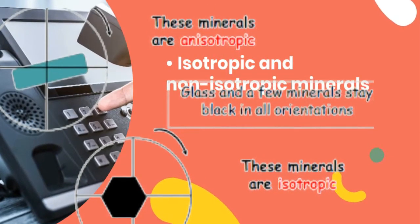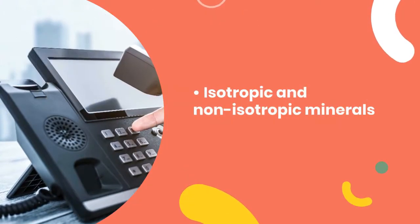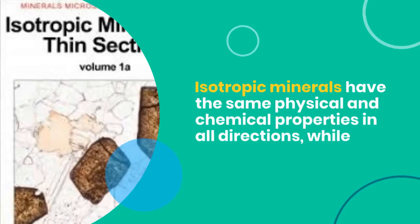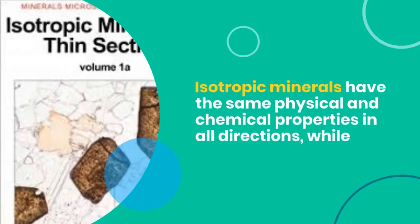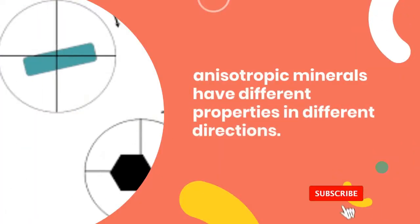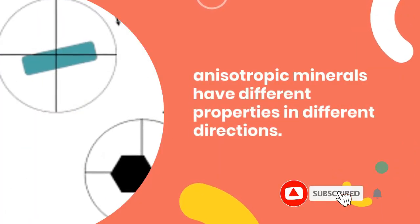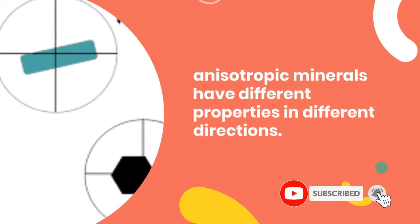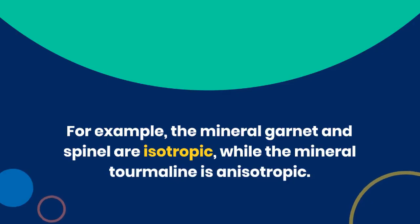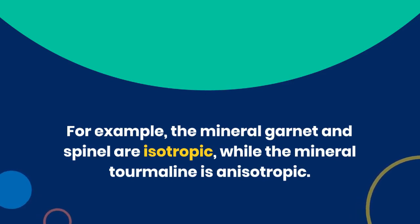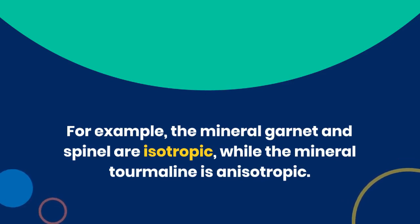Isotropic and non-isotropic minerals: isotropic minerals have the same physical and chemical properties in all directions, while anisotropic minerals have different properties in different directions. For example, the minerals garnet and spinel are isotropic, while the mineral tourmaline is anisotropic.